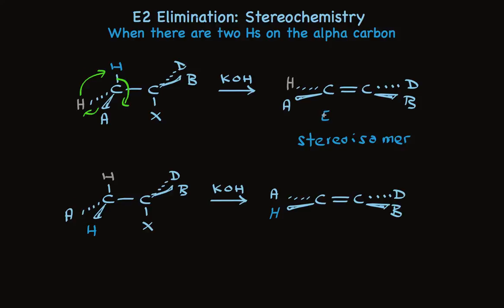Whether this is E or Z is determined by what A, B, and D are. But it's only one. And whichever one this is, this is the other one. So I'm going to write Z or E. And I have a question for you. Which of these two stereoisomers is favored?